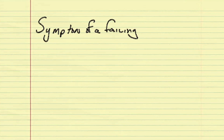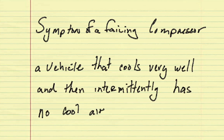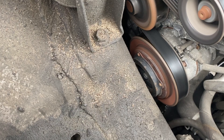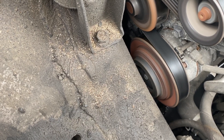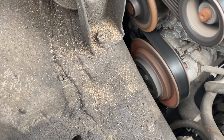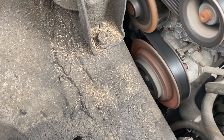A common symptom of a failing electromagnetic clutch is a car that cools well and then all of a sudden has nothing, and then randomly starts working again. The clutch can be changed separately, but it's not always worth it, so check both options.